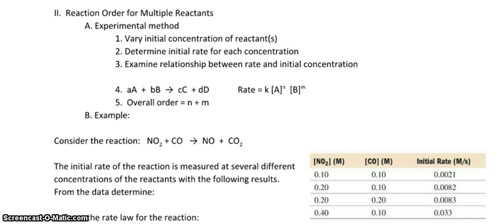You have to use the experimental method, and that's what our lab coming up is going to show you. We're going to vary the initial concentration of the reactants, determine the initial rate for each concentration, and examine the relationship between the rate and the initial concentration. Using one reactant, you needed a minimum of two experiments. Using two reactants, you're going to need at least three. For a generic equation, N and M are the orders of the reactants, and the overall order adds them up.